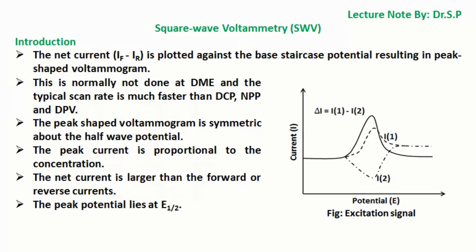This technique is normally not performed at a dropping mercury electrode (DME), and the typical scan rate is much faster than DCP, NPP, and DPV. The peak-shaped voltammogram in SWV is symmetric about the half-wave potential, and the peak current is proportional to the concentration. The net current is larger than the forward or reverse currents, and the peak potential lies at E-half.